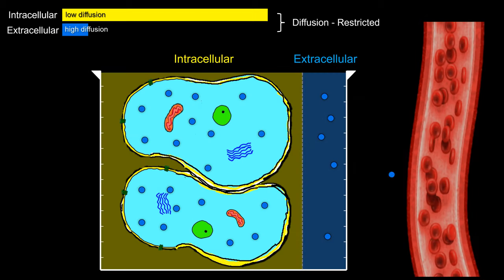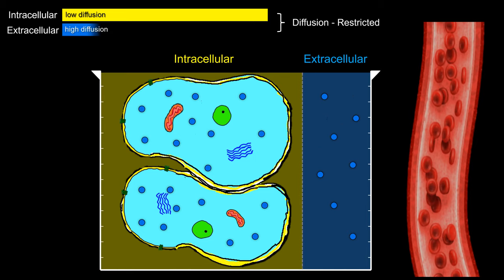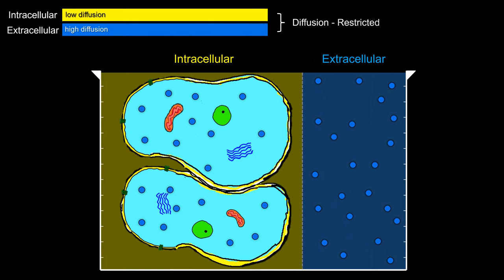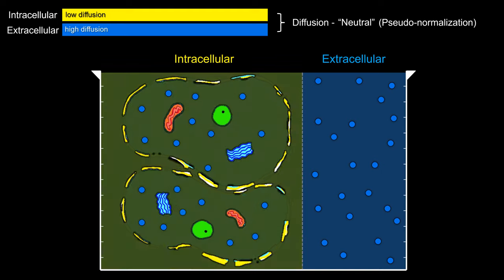Then as the cells draw water from the vascular space, vasogenic edema begins to balance out the ratio between extracellular and intracellular water. More water comes in from the vascular space, and eventually we're back to a diffusion-neutral state. This is what's happening with ADC pseudonormalization, roughly around the second week.